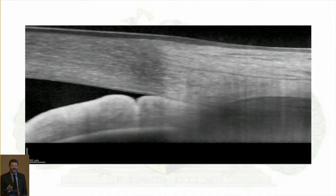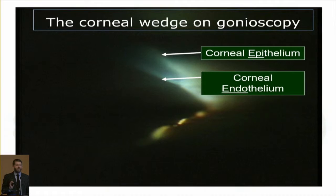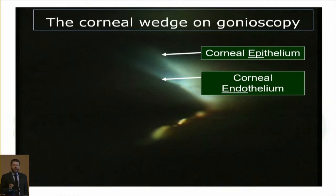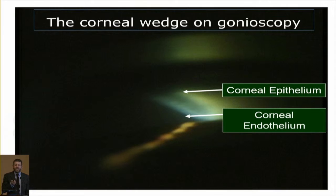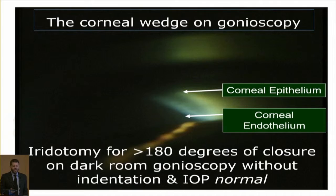We are talking about iridotrabecular contact — contact between the iris and the trabecular meshwork. The requirement for all patients for diagnosis, even with beautiful anterior segment imaging, remains gonioscopy. We need to identify the corneal wedge on gonioscopy and know that beyond that, the structures we can see are trabecular meshwork. Previously, we recommended iridotomy for cases with 180 degrees of closure on dark room gonioscopy without indentation, and for the moment that remains the case for patients with normal pressures.